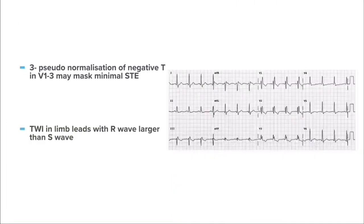Another finding is T wave inversion in limb leads where R wave is larger than S wave. In the ECG, in lead 3 there is T inversion, but the terminal QRS deflection is upright and the S wave is more than R wave — in that case, T inversion can be normal. However, in the absence of this feature, if there is T wave inversion in two anatomically contiguous limb leads, it again indicates ischemia.